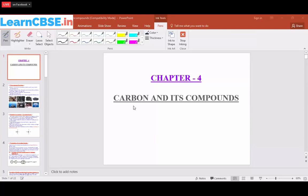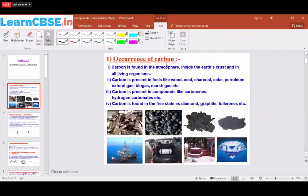Today we are going to see the chapter on carbon and its compounds. Occurrence of carbon: Carbon is found in the atmosphere, inside the earth's crust, and in all living things.